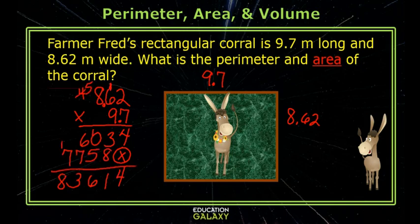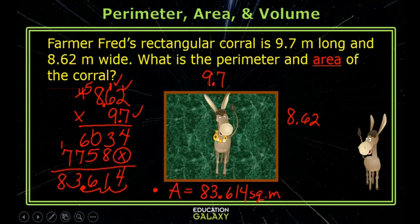Now let's count all of our digits to the right of the decimal point. One, two, three. So I start at the right and go backwards three places. So my area is 83.614 square meters.